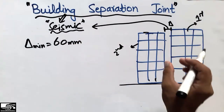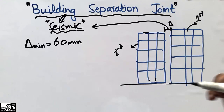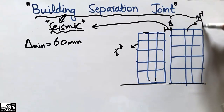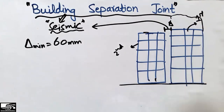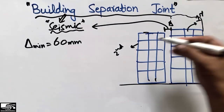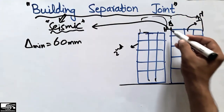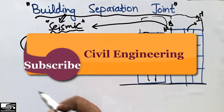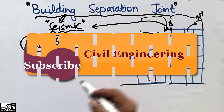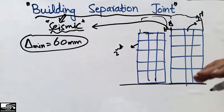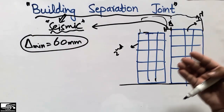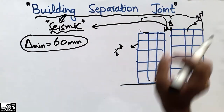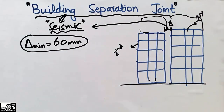If the buildings are of higher stories — meaning a high-rise building — we should increase this distance. The 60 millimeter value is the least minimum. If the number of stories increases beyond a certain limit, we must increase the distance between the two buildings.